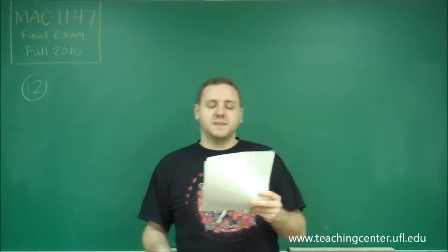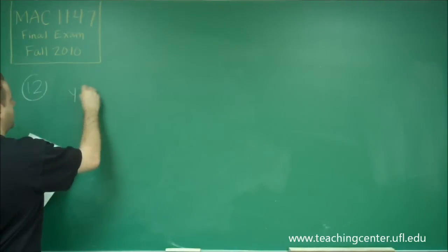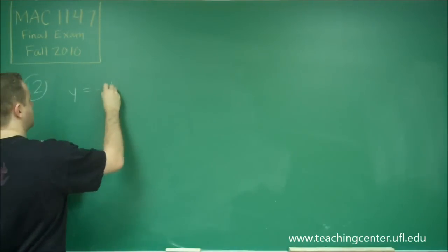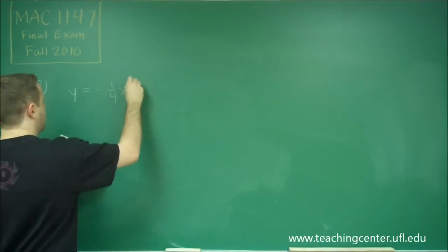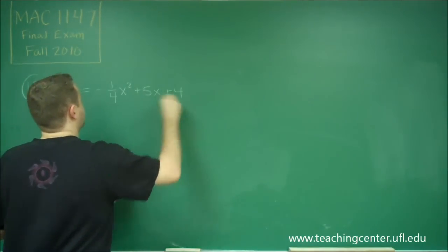Okay, for number 12, we're asked to find the maximum value of a quadratic function, and our quadratic function is y equals negative one-fourth x squared plus 5x plus 4.